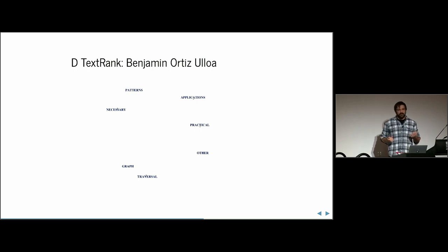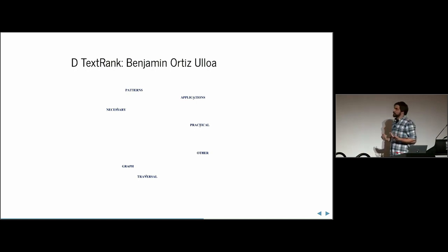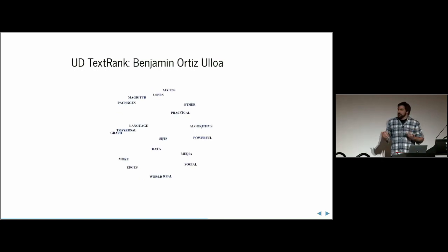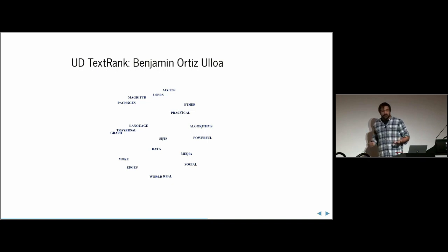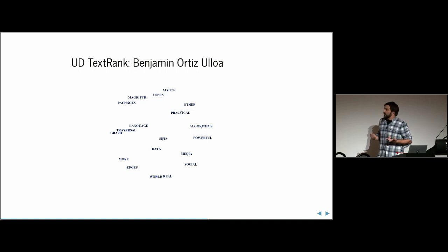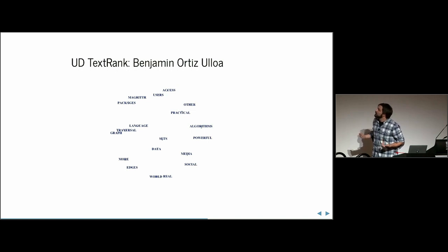The 'D' on the slide represents directed TextRank — just using PageRank as a directed thing. It's worth playing around with your data once you have it. Here's the undirected version of the same data — a lot of people suggest using undirected, though I'm not 100% sure about that. Different concepts come out using directed versus undirected PageRank: with undirected, we get 'social media,' 'powerful algorithms,' 'data sets,' and 'real world' as concepts.